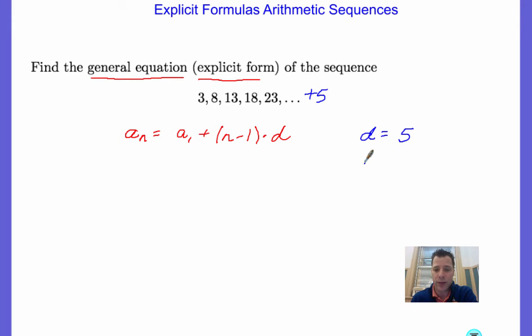We also know that the first term, a sub 1, is equal to 3. Now, to use this equation to find the general equation, now it's a matter of substitution. a sub n equals 3 plus the quantity n minus 1 times 5.